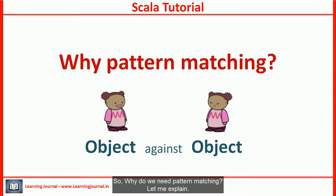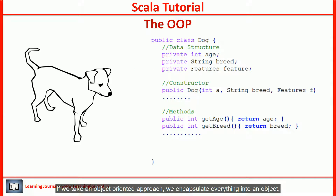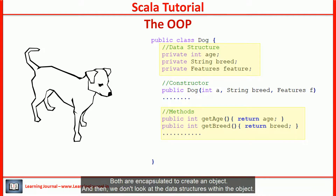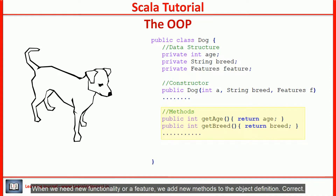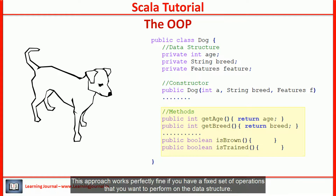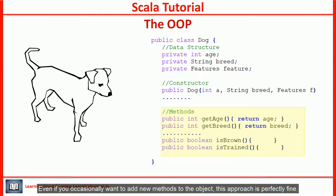Why do we need pattern matching? In an object-oriented approach, we encapsulate everything into an object — both the data structure and the methods to work on those data structures. We don't look at the data structures within the object; we just use methods. When we need new functionality, we add new methods to the object definition. This approach works perfectly fine if you have a fixed set of operations to perform on the data structure.